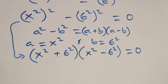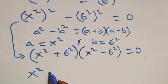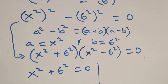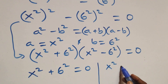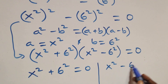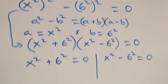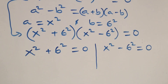From here we have two possible cases: first, x² + 36 = 0, or second, x² − 36 = 0.